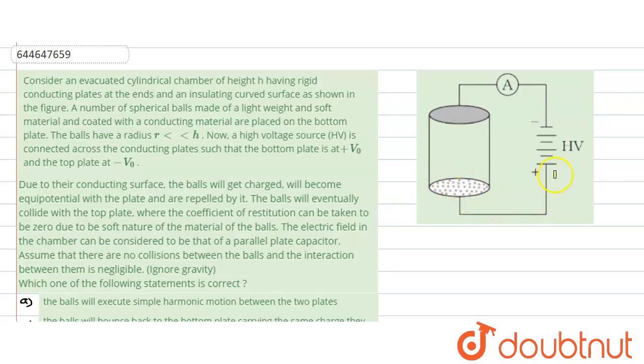The balls would gain the same potential, making the equipotential surfaces. Being connected to the positive terminal, the balls would become positively charged. Due to this positive charge, there would be repulsion. The balls will eventually collide with the top plate and are repelled by it.